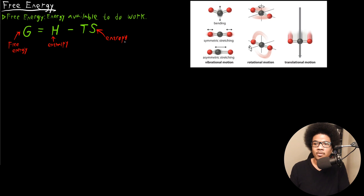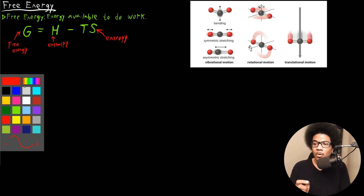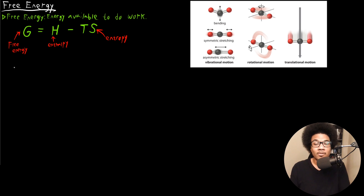T is our temperature. So the free energy is clearly related to things that we already know. Obviously it's a new definition, but it's related to concepts that you already have a good grasp of — enthalpy and entropy. Usually we discuss the free energy in terms of the change in free energy, just like we've discussed the enthalpy in terms of changes in enthalpy and the same thing for entropy. So this equation can also be written as delta G is equal to delta H minus T delta S.